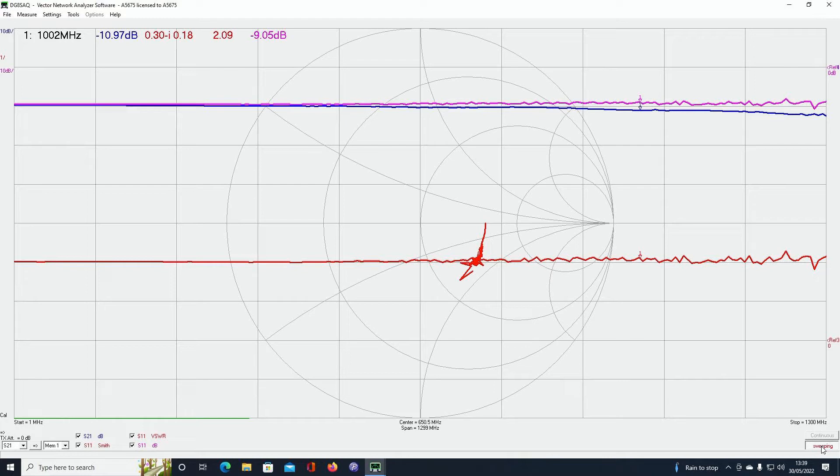S11 which is the reflection is minus 9. That should be minus 20-ish, something like that. So this is really a walking disaster.